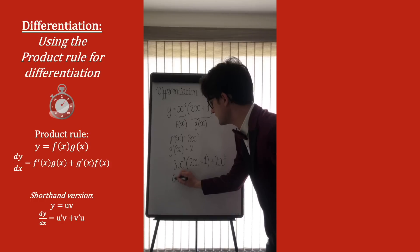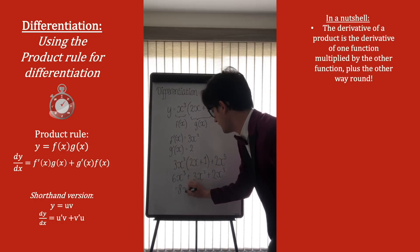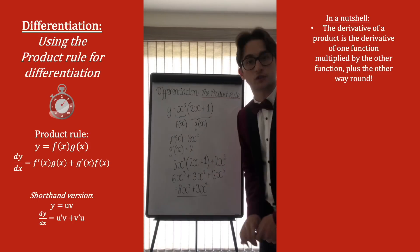We can tidy this up if we get 6x cubed plus 3x squared plus 2x cubed, which simplifies to 8x cubed plus 3x squared. And that is our derivative of this function here.